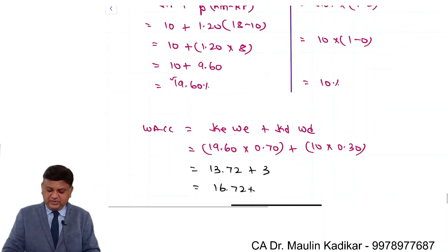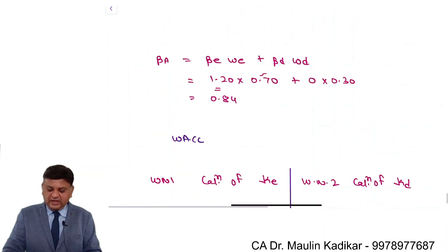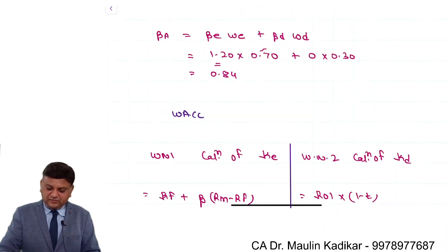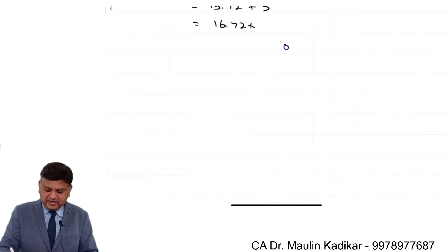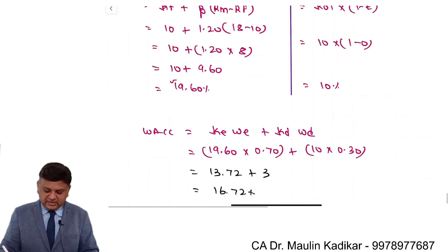Again friends, same explanation. You may compute the weighted average cost of capital taking into account the beta of unlevered equity 0.84. In that case the answer can be calculated like this: RF plus beta into RM minus RF.